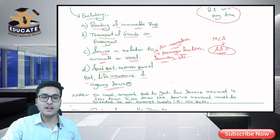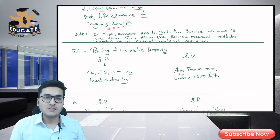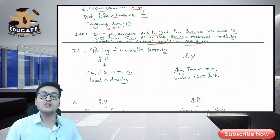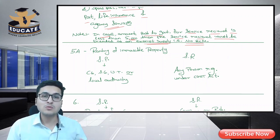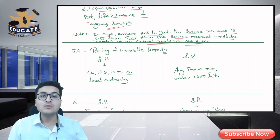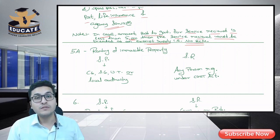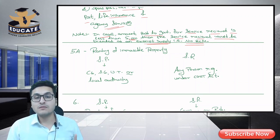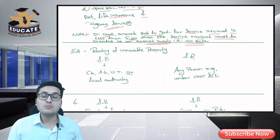Now, in case the amount paid to the government for a service received is less than ₹5,000, then the service received would be treated as an exempt supply — that is, no reverse charge mechanism applies. If the government provides you any service whose value (derived as per Section 15) is less than ₹5,000, then that service is treated as exempt and no tax is charged.